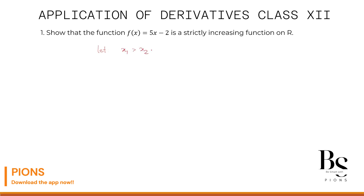Let x1 be any number on the real number line such that x1 is greater than x2. If x1 is greater than x2, then it is obvious that 5 times x1 will be greater than 5 times x2. Because if x1 is greater than x2 on the number line, when you multiply by 5, obviously 5·x1 will be greater than 5·x2.